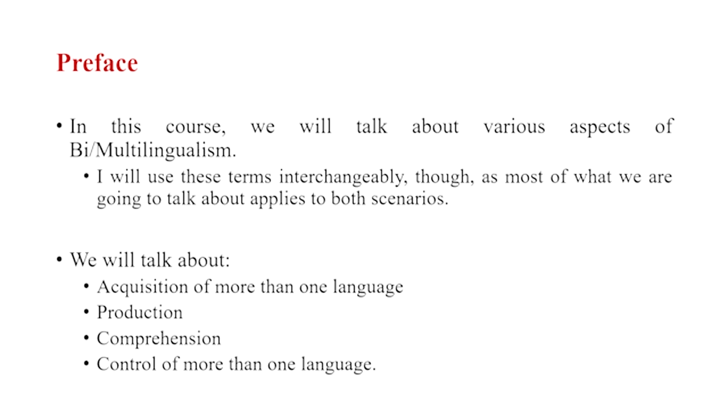What I am going to talk about will be structured in four basic verticals. I am going to majorly stress on the acquisition of bilingualism — how does one acquire more than one language, how does one learn to use and produce in more than one language, how does one understand in more than one language, and finally how does one control two possibly independent, maybe interdependent, linguistic systems within one single head.